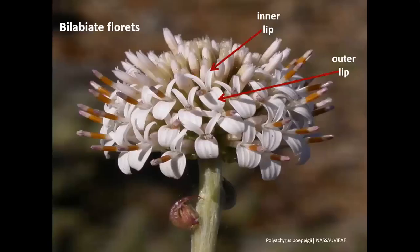This photograph of one species of Polyachyrus shows the inner lip with the two units and the outer lip, and shows also the orientation of these lips. The inner lip is always oriented to the center of the capitulum and the outer lip to the outer part of the capitulum.